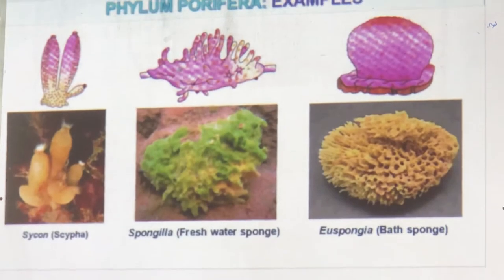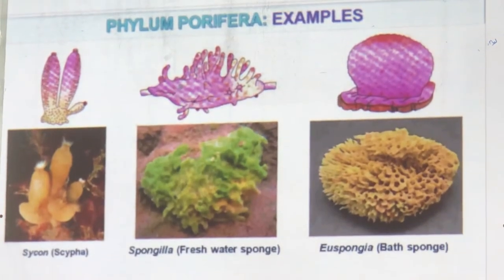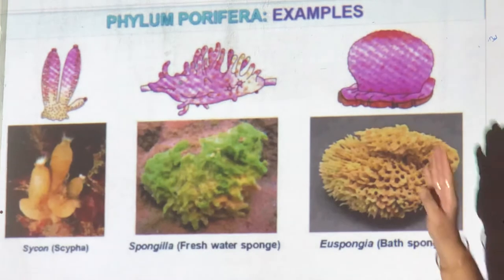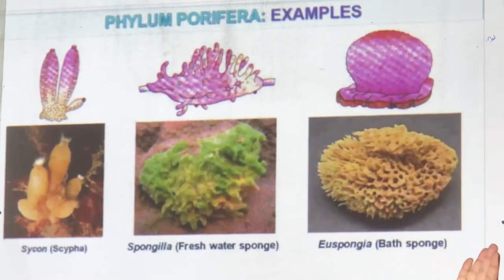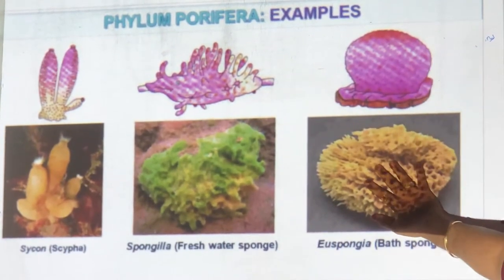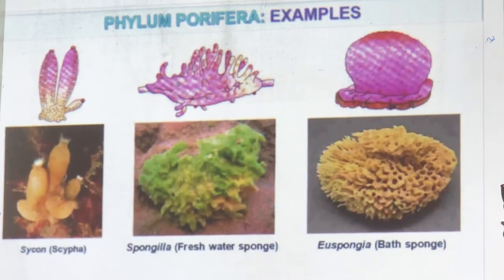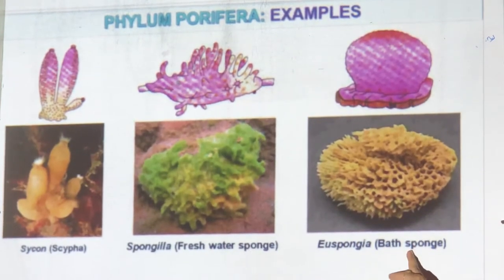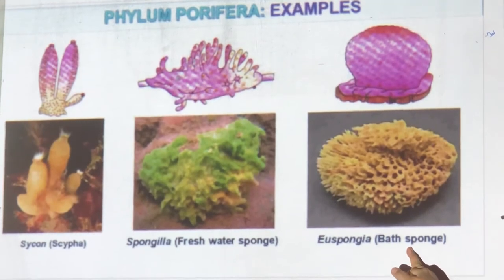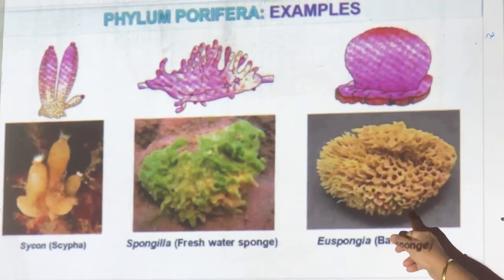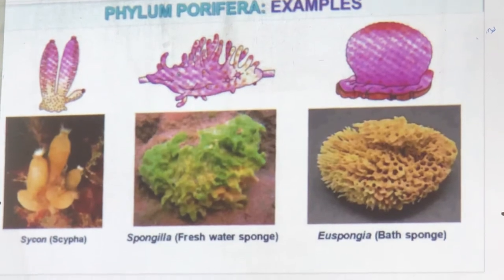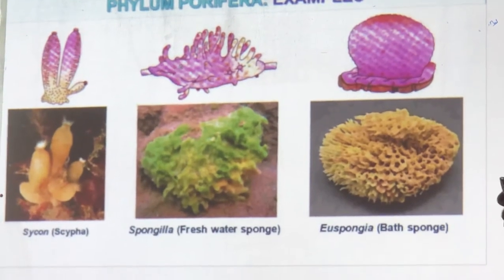Examples of sponges include Sycon and Spongilla — what we draw is totally different from what they actually look like. The actual photograph looks very different from the diagram. Bath sponge has become rare as it requires pure, clean water. Today we use stones and rubber sponges instead.